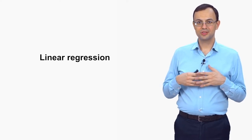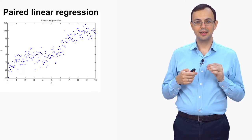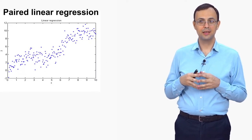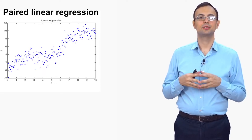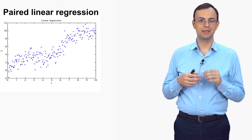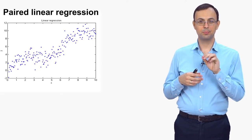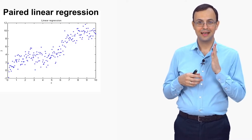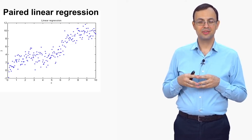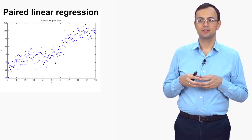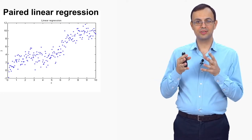So what is the problem we're solving here? Let's say you have two numerical variables x and y, and you have observations on x and y. For example, you choose 200 random people and you measure the weight and the height of each person. Every point on this graph corresponds to a person, so x is weight and y is height. You see that there is a statistical dependence between x and y.